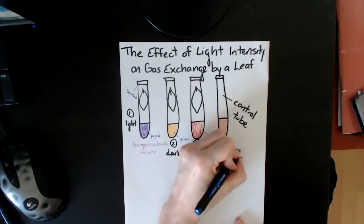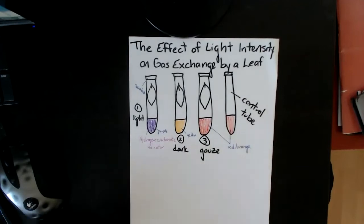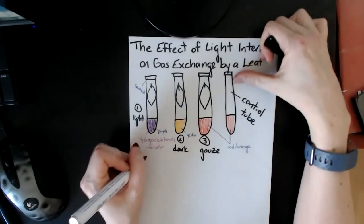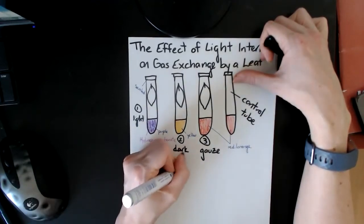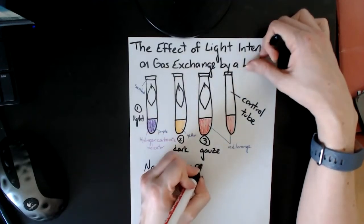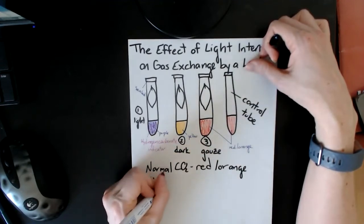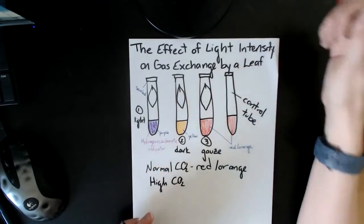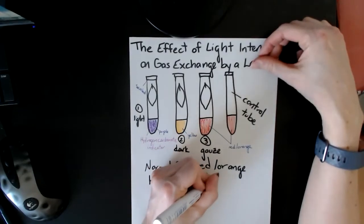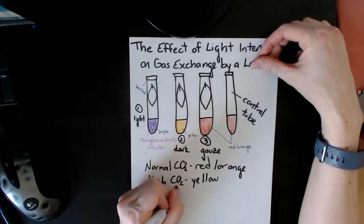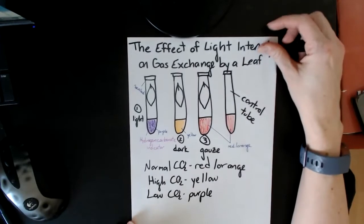So the idea is that at normal CO2 levels, when we're talking about this indicator, as in the air that you normally breathe every day, the normal CO2, it will be orange or red. At high CO2 levels, so for example, if you were to take some hydrogen carbonate indicator and breathe into it for a while, the CO2 from your lungs would go in and make it yellow. And at low CO2, it usually becomes kind of a red-purple.